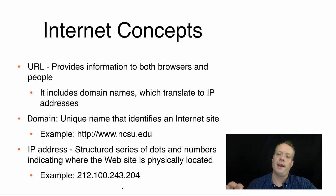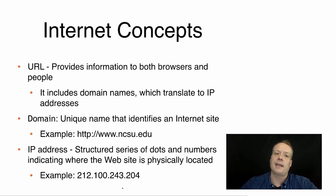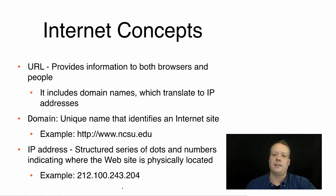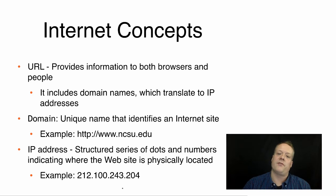The URL includes the domain name within it. When I type that into my browser, my browser contacts a specific computer server called a domain name server. That server says, hey, this person wants this piece of content — where is it located? Rather than telling the computer exactly where it's located, the domain name server gives it an IP address, typically a set of four numbers separated by dots, which my computer can then use to look up where that website is physically located.